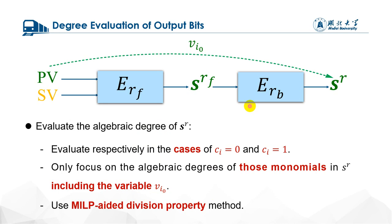Thus, the third step is to detect the effectiveness by estimating the maximum algebraic degrees of these monomials in s^r, including these variables v_i[0]. We utilize the MILP-aided division property method to estimate algebraic degrees instead of the trivial bounds. The MILP-aided division property has been verified to be the most accurate method for degree evaluation.